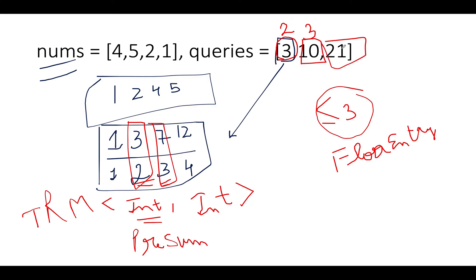Next we have 21. Again we ask the tree map what is the immediately lower maximum prefix sum that exists in the tree map lower than or equal to 21. It will be 12, and corresponding to 12, the number of elements is 4. So the answer is 4. With this we have concluded the entire algorithm, and I will be doing the exact same steps in the coding section as well.